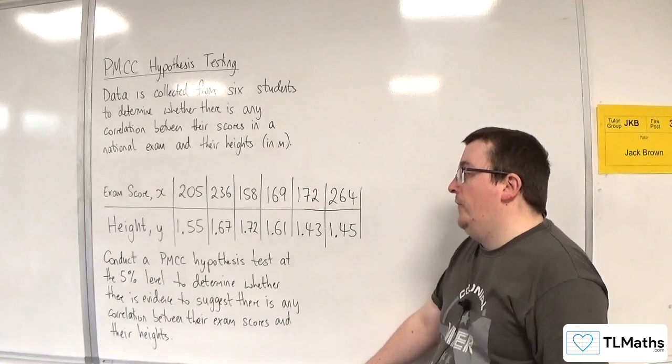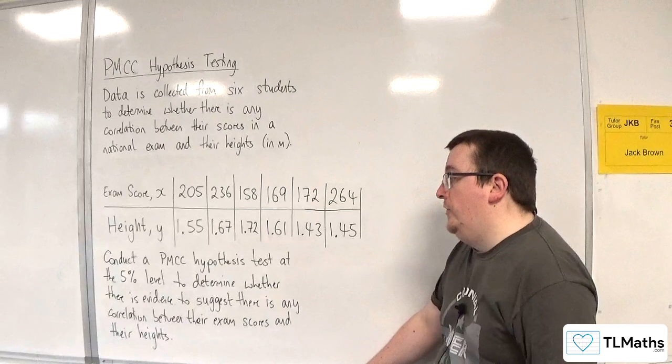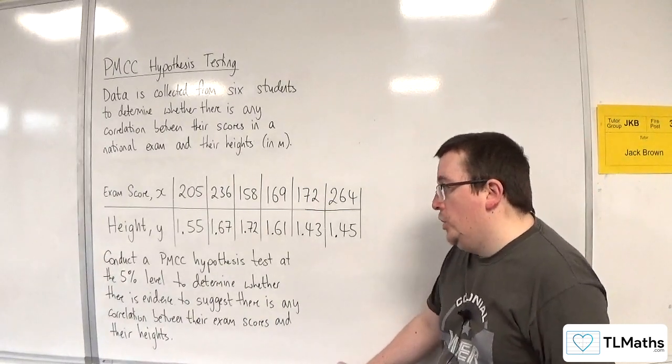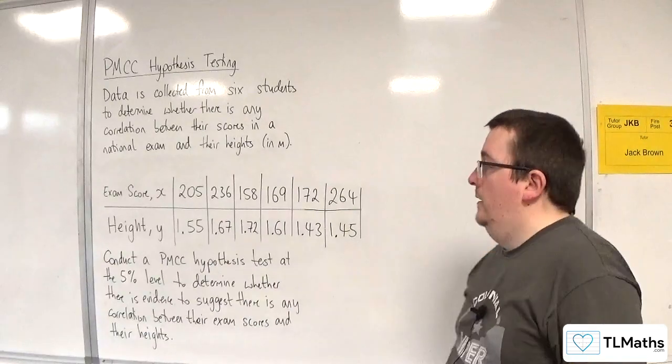Conduct a PMCC hypothesis test at the 5% level to determine whether there is evidence to suggest there is any correlation between their exam scores and their heights.